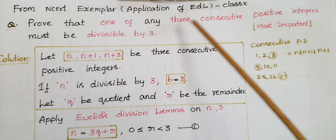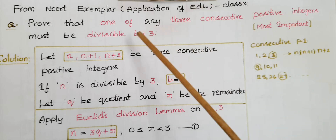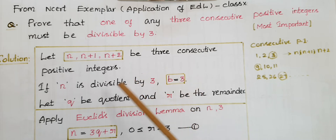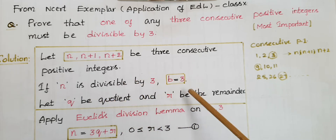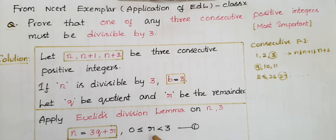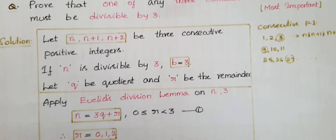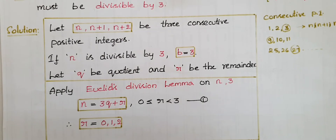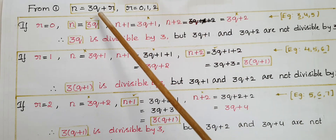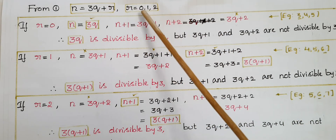Here one of the three consecutive positive integers must be divisible by 3. The divisor is 3; let q be the quotient and r be the remainder. Applying Euclid's division lemma on n and 3: n = 3q + r, where 0 ≤ r < 3. Therefore r can be 0, 1, or 2.